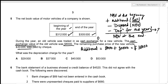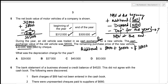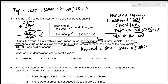The disposed vehicle is recorded at net book value, which we treat as zero since it wasn't given. So: $312,000 plus $38,000 minus $0 minus depreciation equals $305,000. Rearranging: depreciation equals $312,000 plus $38,000 minus $0 minus $305,000, which gives a depreciation charge of $45,000 — given in option C.